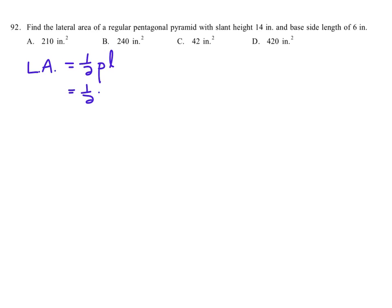1 half then times the perimeter. It is a regular pentagonal pyramid. There's five sides, and this is a base side length of 6. So the perimeter for that is 5 times 6, or 30.